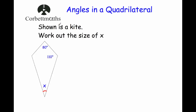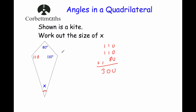Here's a typical question — work out the size of angle X in this kite. We've got the top angle of 80 degrees, the one on the right is 110 degrees, the one on the bottom is X, and the left one is missing. Because it's a kite with a line of symmetry, the left angle must also be 110 degrees. So we add 110 plus 110 plus 80: 0; 1 plus 1 plus 8 is 10, put the 0 down, carry the 1; and 3. These three angles add up to 300 degrees. Taking that away from 360, angle X is equal to 60 degrees.